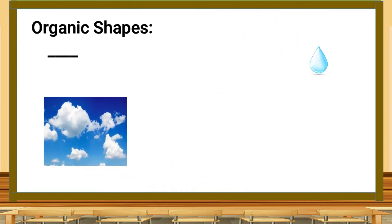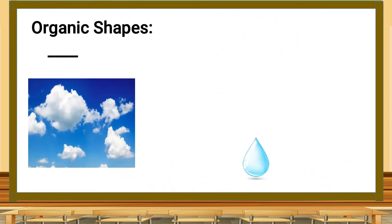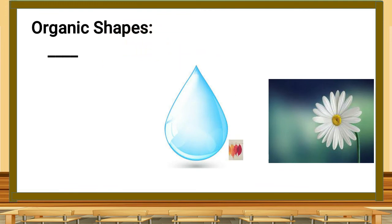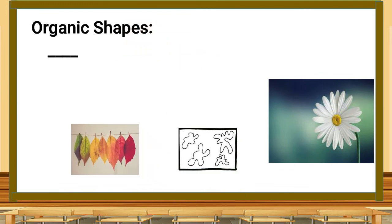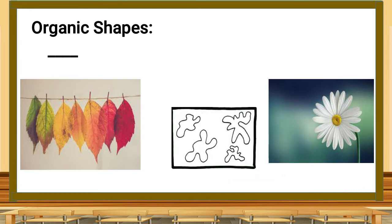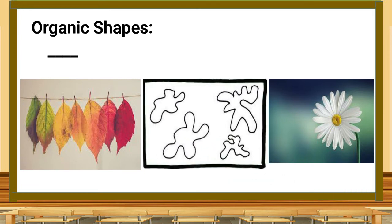You won't often see flat sides on organic shapes, like clouds, raindrops, flowers, leaves, and free form shapes like we see here. Those are all organic shapes.